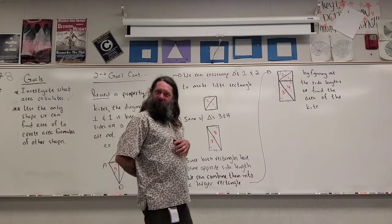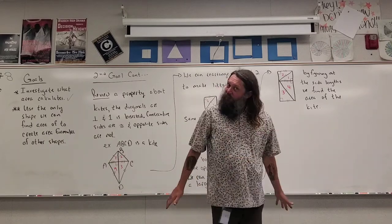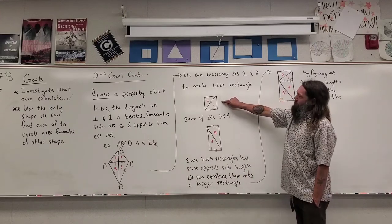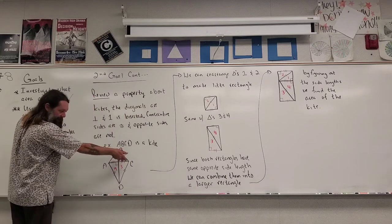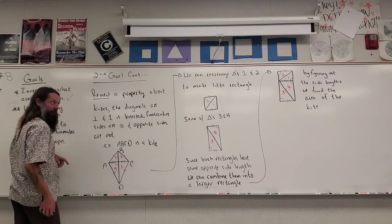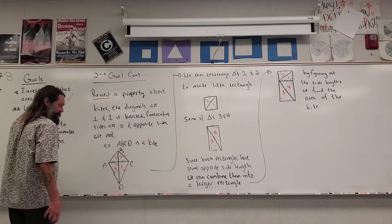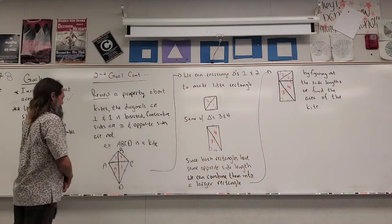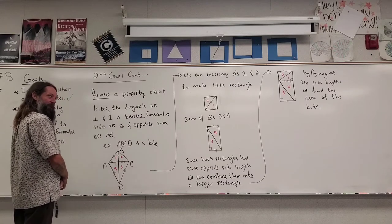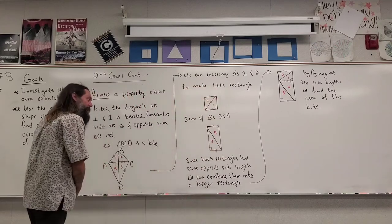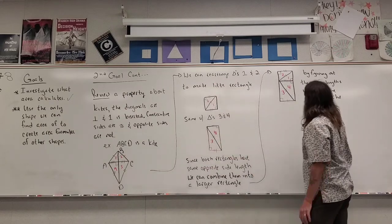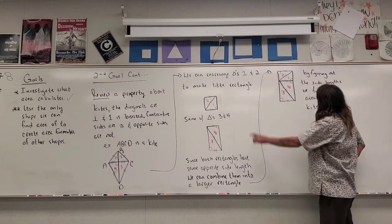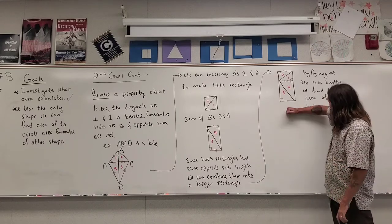This is a clever argument. If I don't add or take away, I still need the same number of squares to cover. We rearrange triangles 1 and 2 to make a little rectangle by spinning triangle 2 around and gluing the congruent side together. We also take triangles 3 and 4 and do the same to make another little rectangle. Since both rectangles have the same opposite side lengths, we combine them into a larger rectangle.